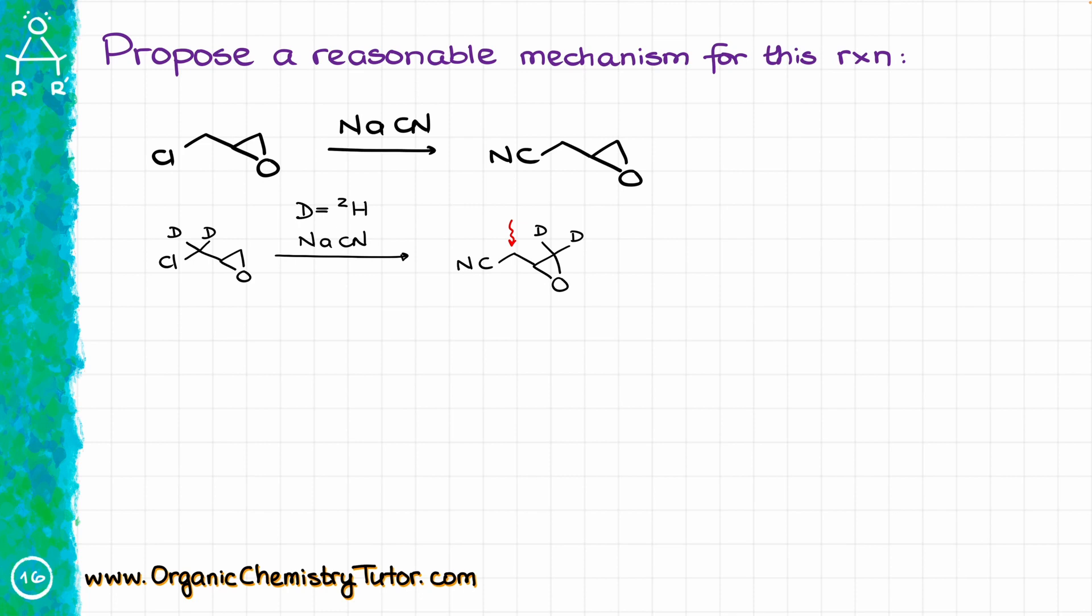The only way how we can make those deuteriums move around is to have a different mechanism. So what actually happens there is that our cyanide, instead of attacking the atom with the chlorine, is going to attack the carbon of our epoxide, opening the epoxide ring, giving us a negatively charged intermediate that looks like that.